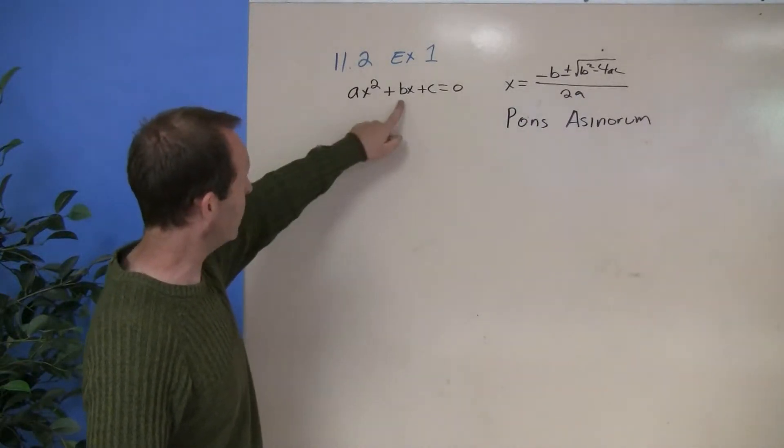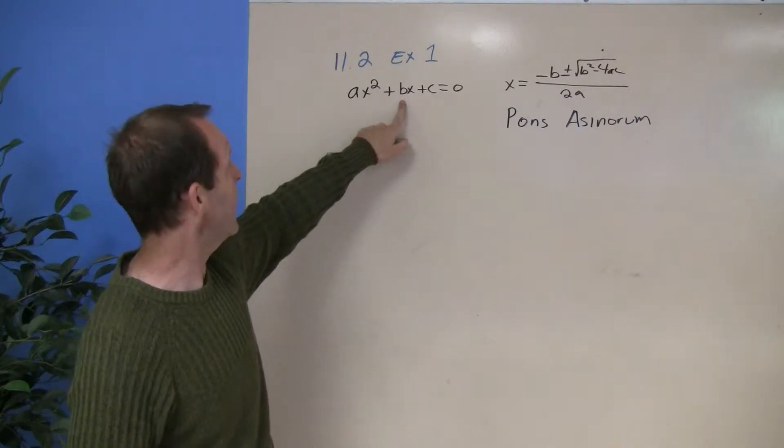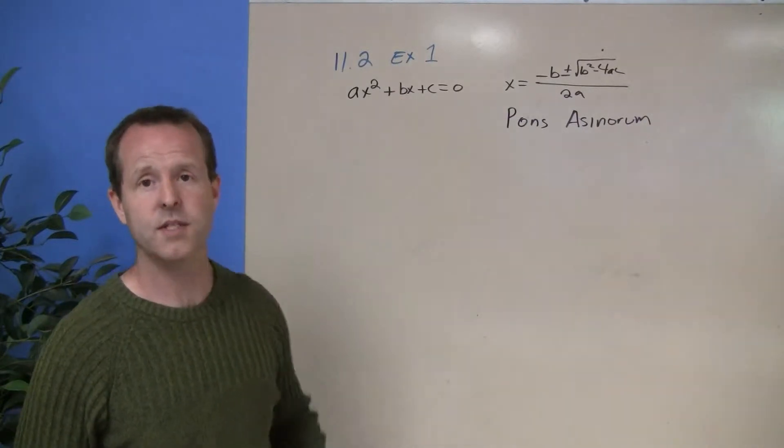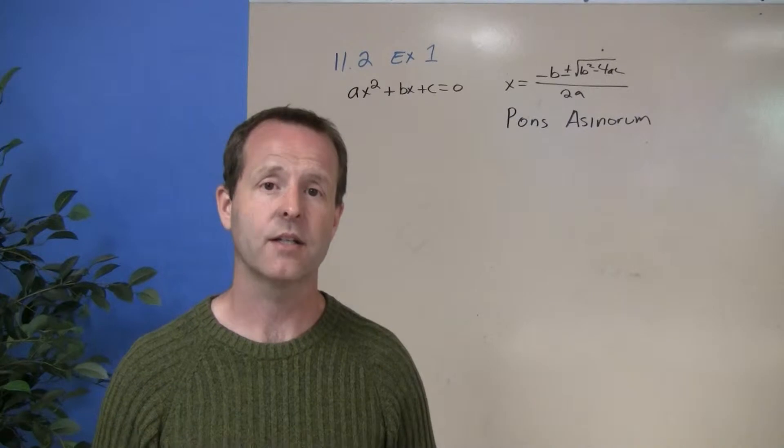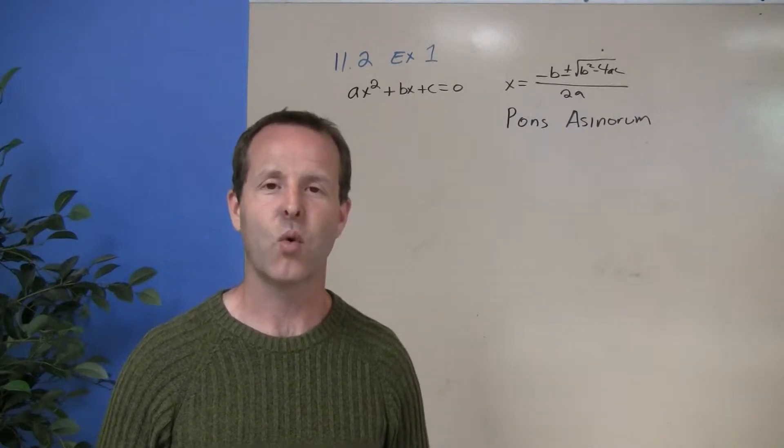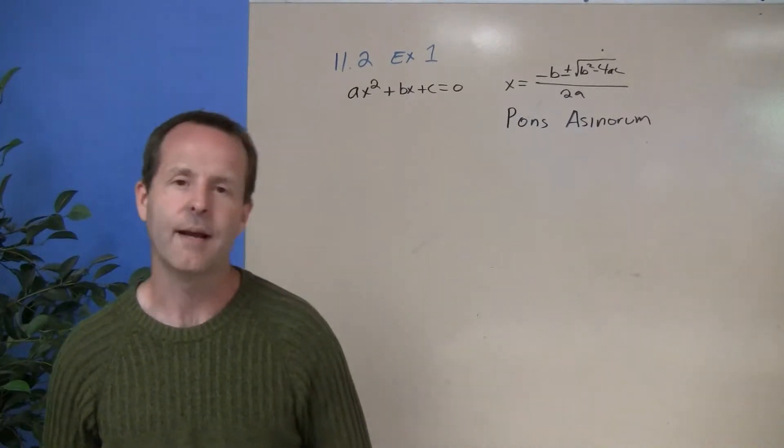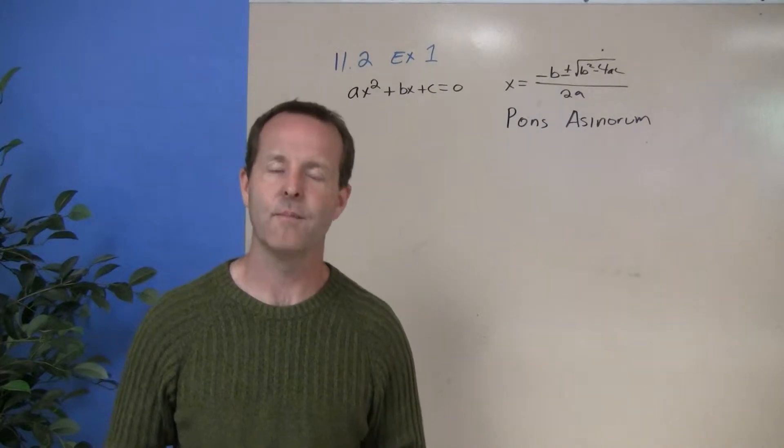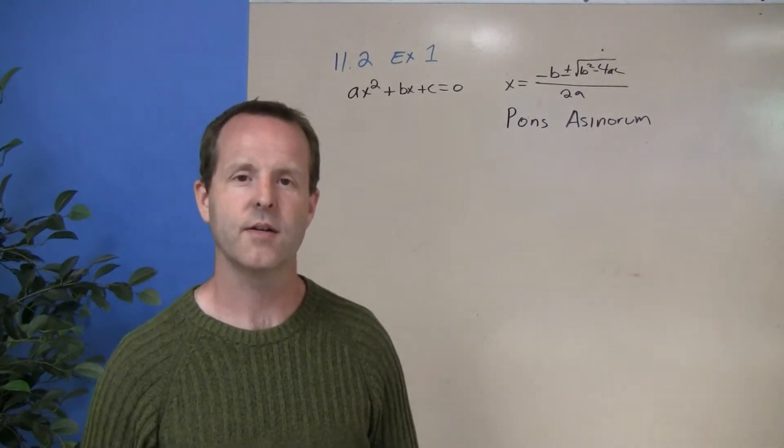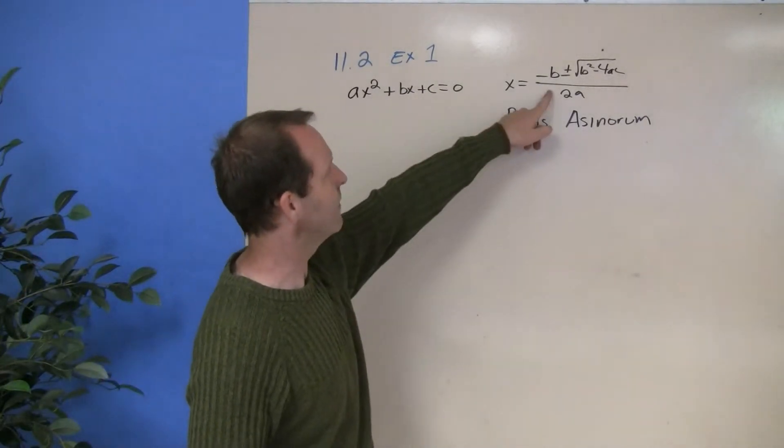Basically what it starts on is that we have a basic equation, ax squared plus bx plus c equals zero. A standard, generic, general quadratic equation in form. And by solving it through the many tools, completing the square and so forth, you come up to the end of it.